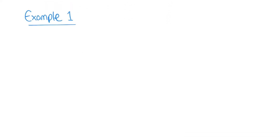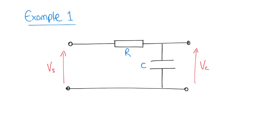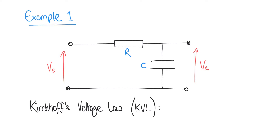For the first example we're going to look at a series RC circuit, which consists of two components: a resistor and a capacitor. We have an input in the form of a supply voltage VS, and the output is the voltage across the capacitor, VC. To start assembling a mathematical model we'll first consider Kirchhoff's voltage law, which says the sum of the voltages dropped around the circuit must equal the voltage applied. So we can say VR plus VC equals VS.